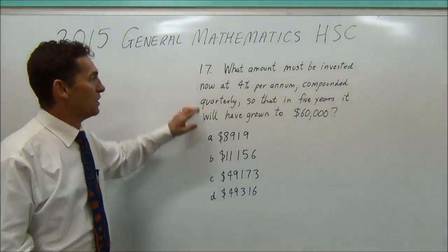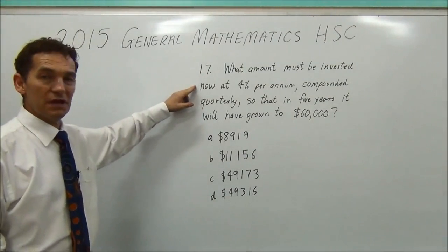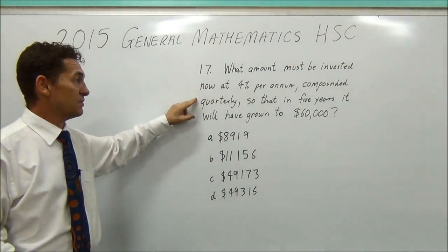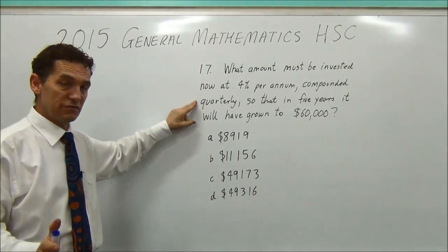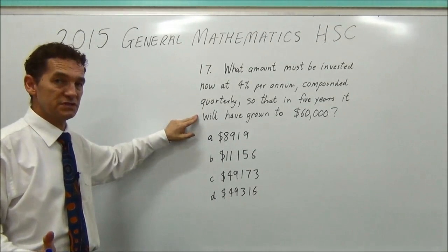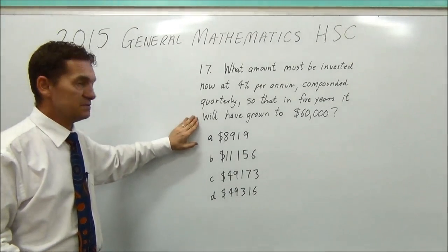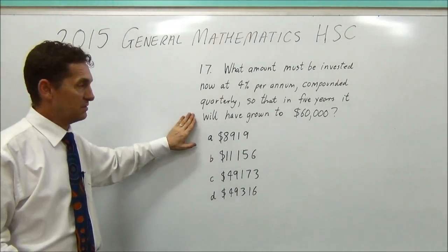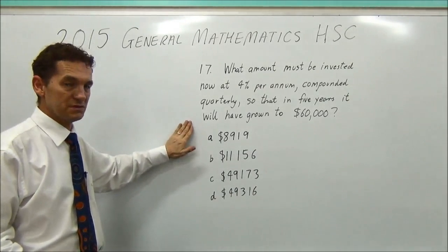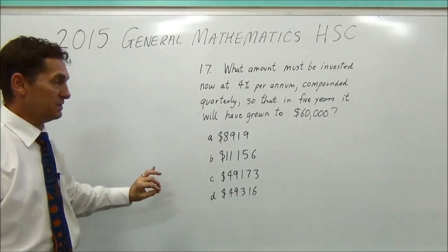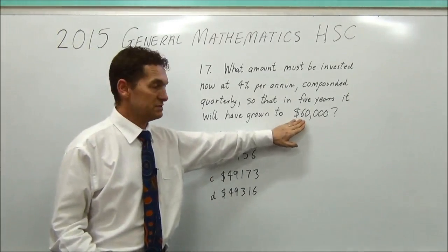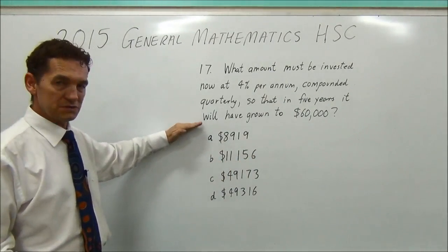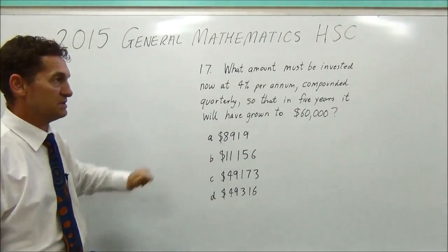Question 17. What amount must be invested now at 4% per annum compounded quarterly so that in five years it will have grown to $60,000? Now this question should actually say to the nearest dollar, but you're assuming that what they mean is the closest answer.